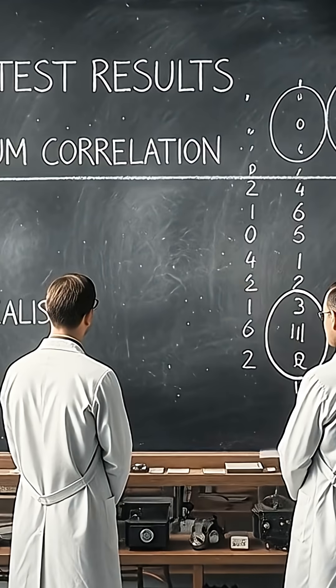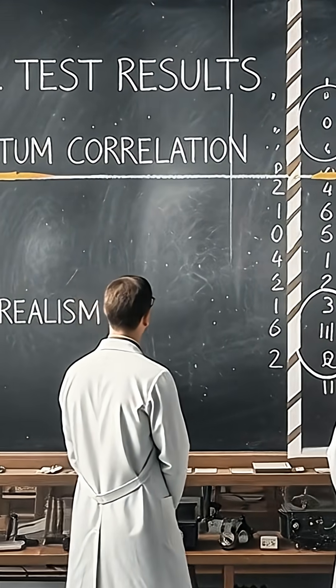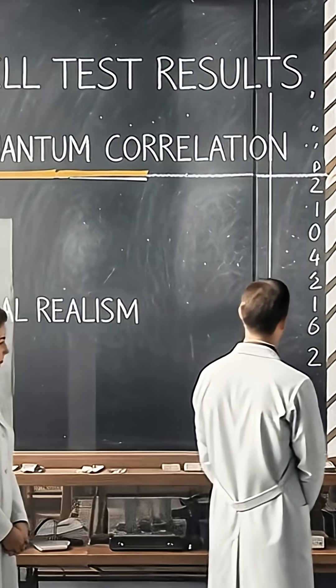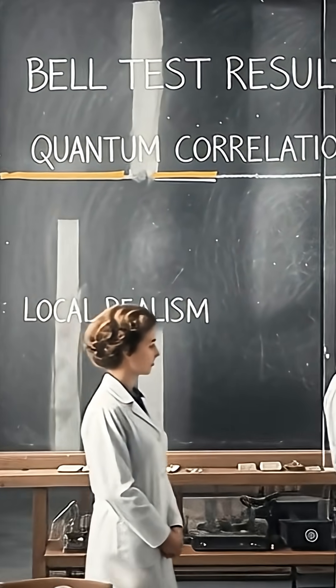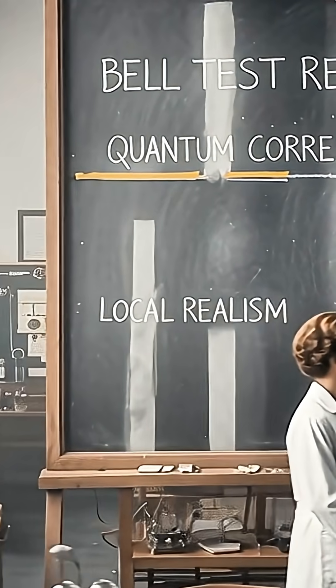If the correlations exceed the limit given by Bell, local realism fails. If they do not, local realism could still be true.